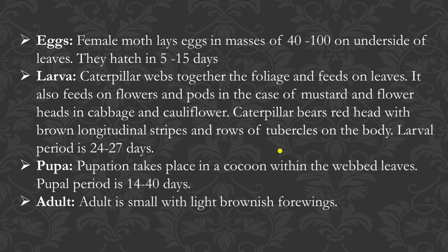Female moths lay eggs in masses of about 40 to 100, which hatch in 5 to 15 days. Newly hatched larvae initially scrape and feed on leaves. Larvae web the foliage together with silken threads and feed on leaves. They also feed on flowers and pods in the case of mustard, and on flower heads in cabbage and cauliflower, destroying them. The caterpillar has a red head with brown longitudinal stripes and rows of tubercles on the body. Larval period is about 24 to 27 days and pupal period is about 14 to 40 days.